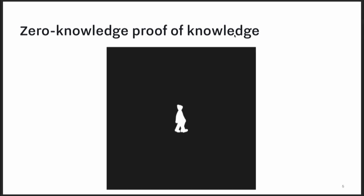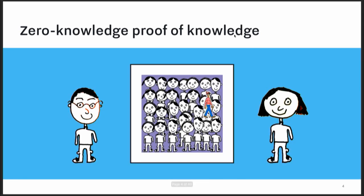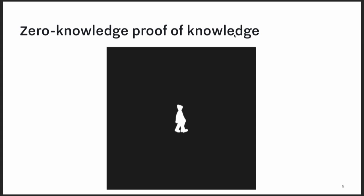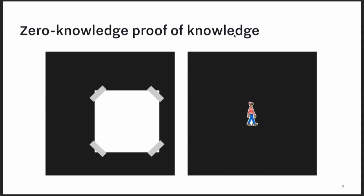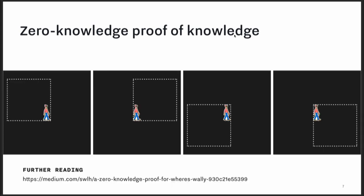Peggy wants to get credit for the work she's done without pointing to where Waldo is, so she uses a zero-knowledge proof of knowledge. She takes a large black sheet of paper — just twice the height and twice the width of the original Where's Waldo puzzle — with a little silhouette cutout of Waldo. She lays this in front of the puzzle and gets Waldo to line up perfectly with the silhouette cutout, then shows Victor the result. Victor sees Waldo in the silhouette cutout and concludes Peggy must know where Waldo was. However, Victor doesn't know anything about the location of Waldo within the puzzle, because regardless of where Waldo is, Peggy can line him up with the cutout.